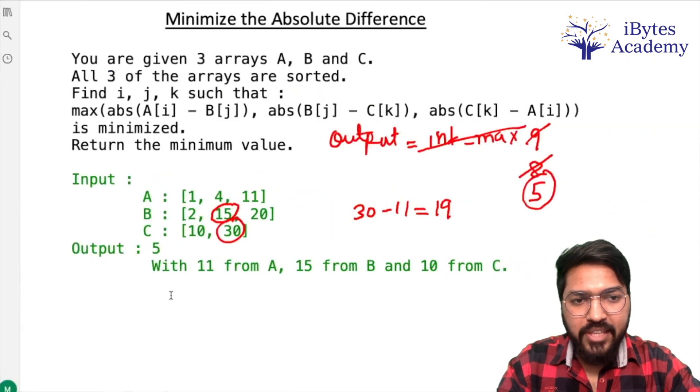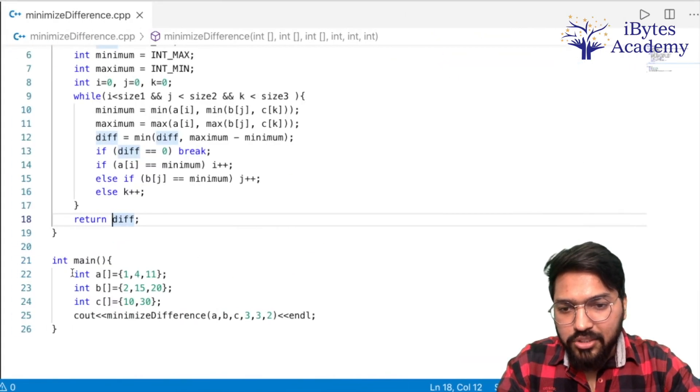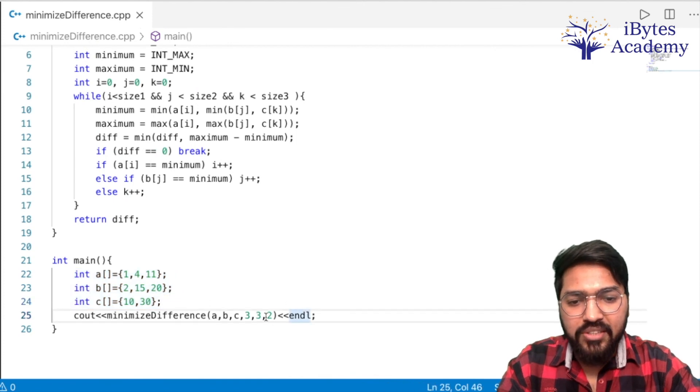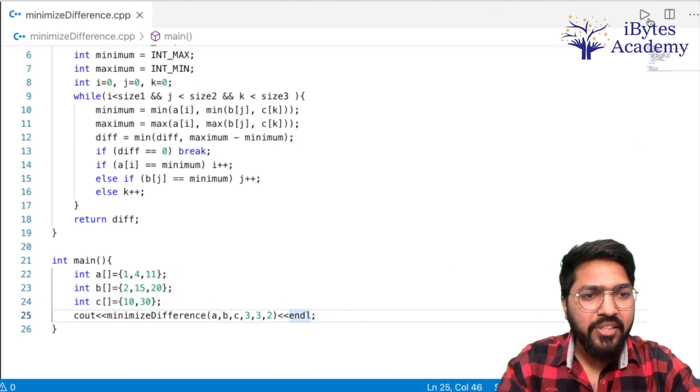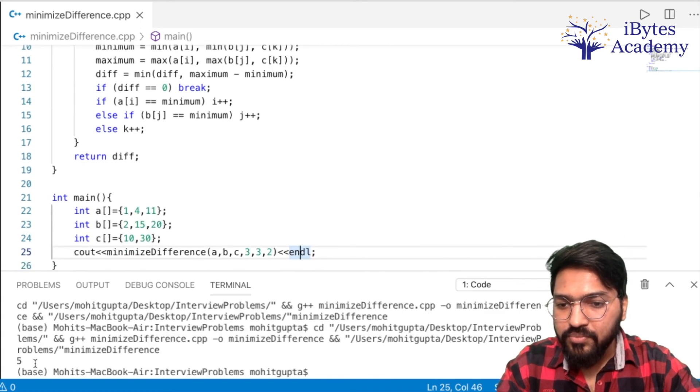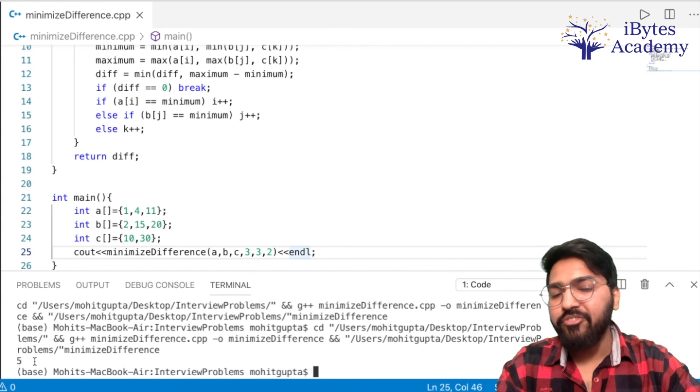So we took the same values here. Let's run it with these values. These are the values over here. 3, 3, 2 are the sizes of the three arrays. So I think it should return 5. So we are getting 5.